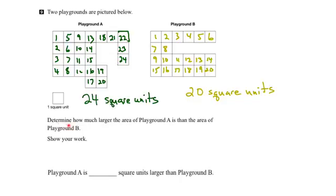So now to determine how much larger the area of Playground A is than the area of Playground B, I'd simply subtract these two values. So if I took 24 for Playground A minus the 20 for Playground B, we'd end up with 4 square units difference.